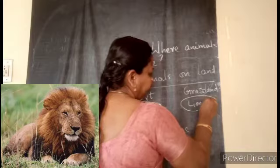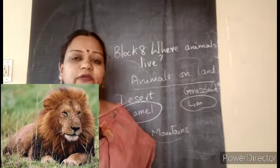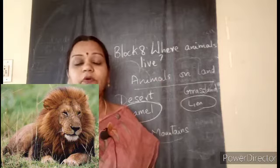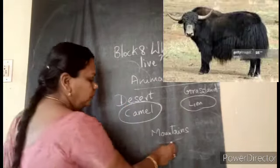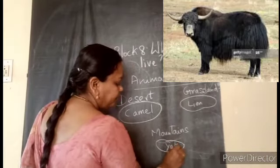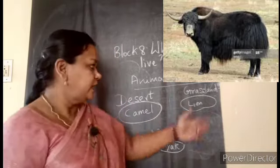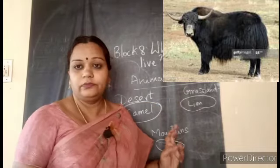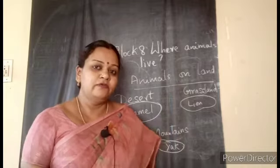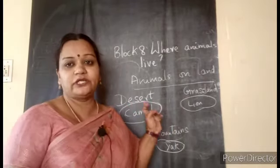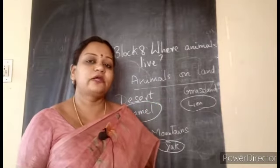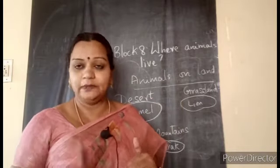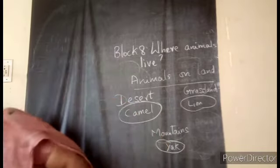We will consider one animal per place so it will be easy to understand how each animal differs from the one found in another landform. In the mountains, mountain goats and yaks are generally found and are used for transportation. If you take a camel and make it live in the mountain, it is very difficult for it to live comfortably there. Same way, a yak cannot survive in the desert. As per the place they live, animals have physical features adapted to live there comfortably.